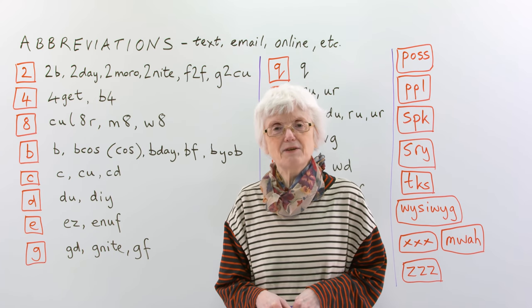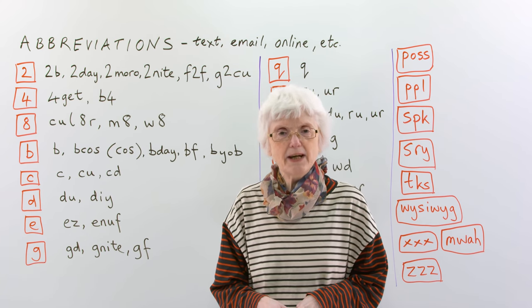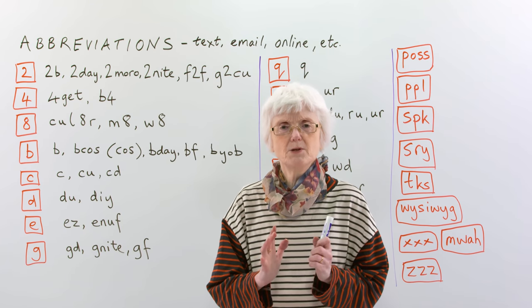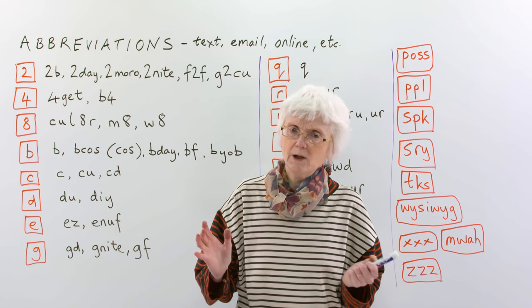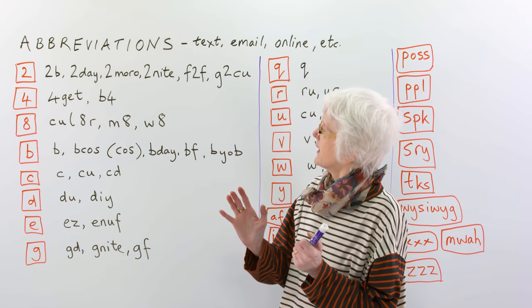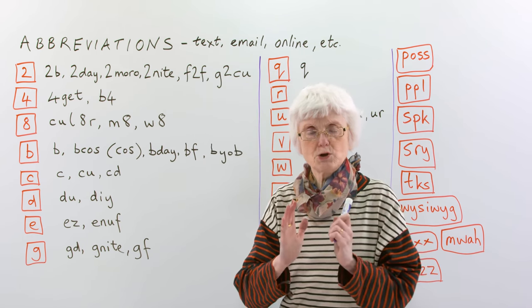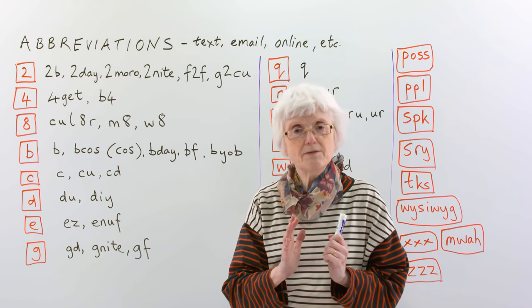Hello. I'm Gill at www.engvid.com, and today's lesson we're looking at shortened forms of longer words which are called abbreviations. When you make something shorter, it's called an abbreviation. That's a very long word for something that's very short.